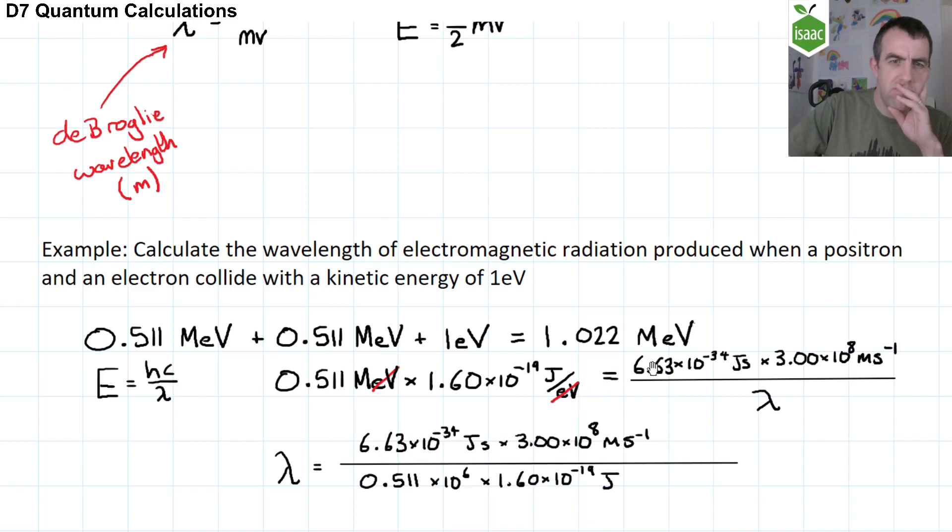So I've just rearranged the equation, so lambda is the subject. And let's have a look what happens to these units. The joules on the numerator cancels with the joules on the denominator. The seconds on the numerator cancels with the per second on the numerator. And so the unit you are left with is metres, which is indeed the unit that we want for wavelength. And what about this mega? Well, I've replaced that with 10 to the power of 6. So now what I can do is plug these numbers into my calculator to get my answer.